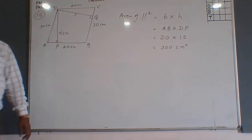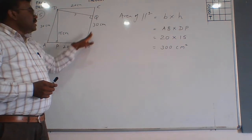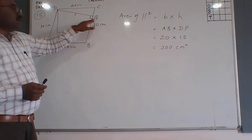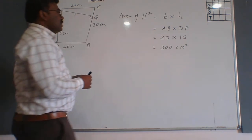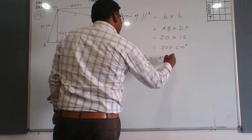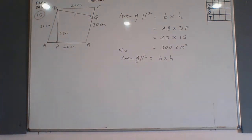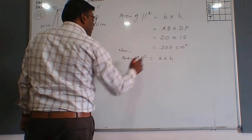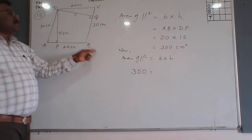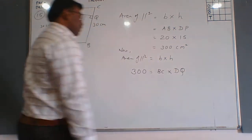Now, if we consider BC — the longer side — as the base, then the height will be DQ, which we want to calculate. Applying the same formula: Area = base × height. Since we know the area is 300, and the base BC is 30, we get 300 = 30 × DQ.